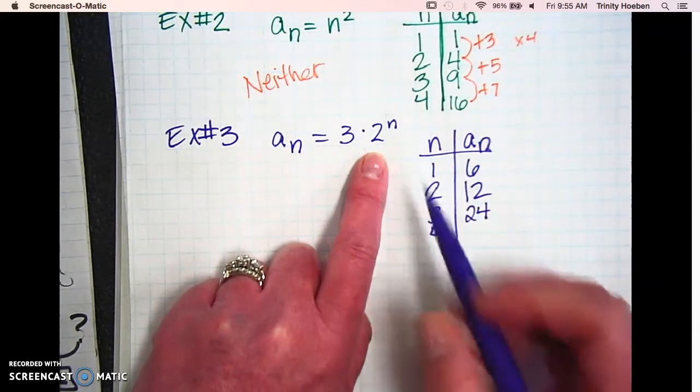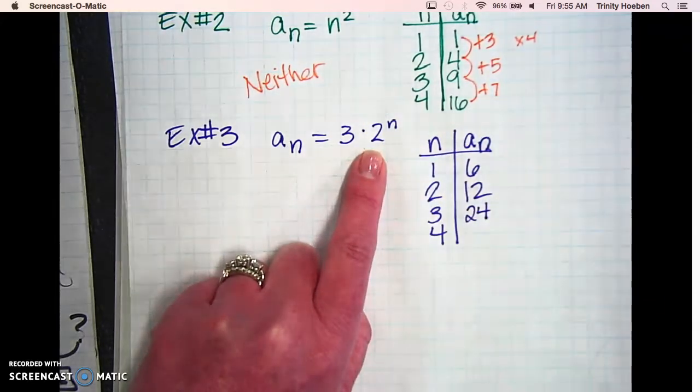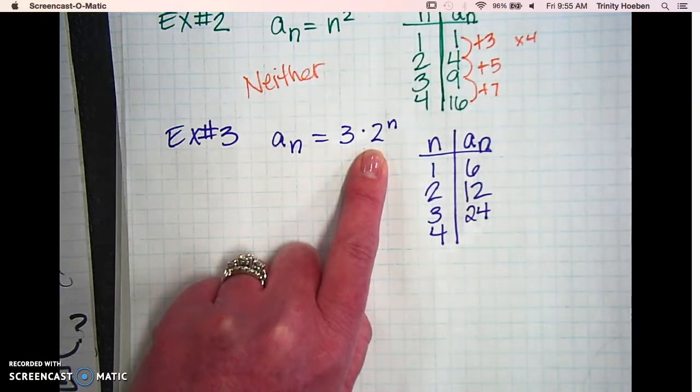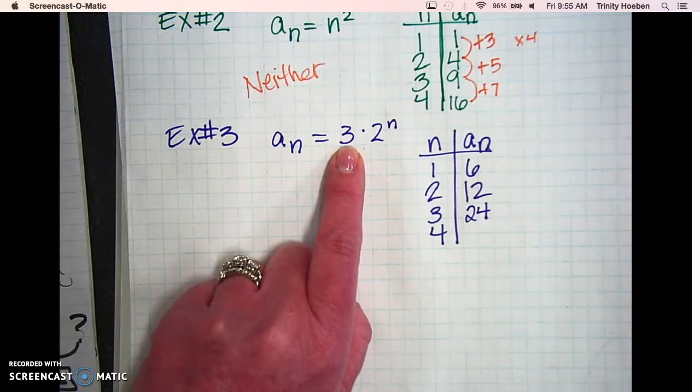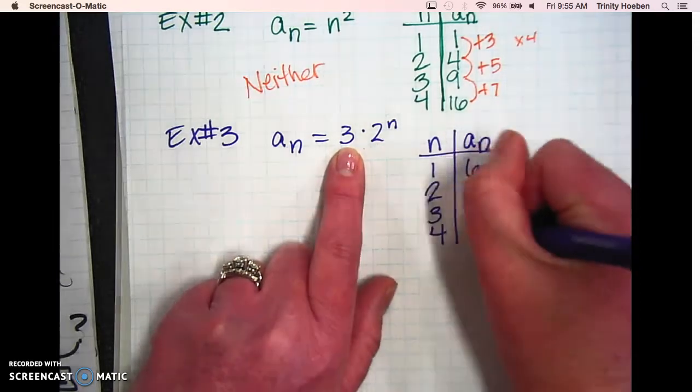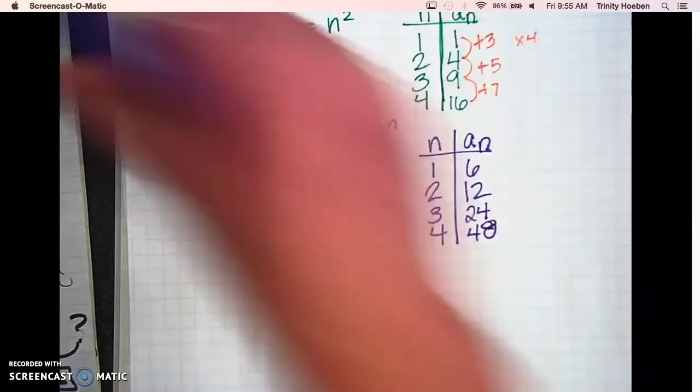Now let's plug in 4. 2 to the fourth power? No, sorry. That's too big. 16. 16 times 3? 48.